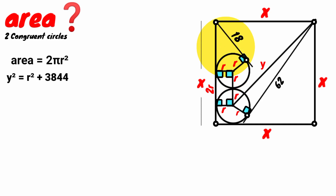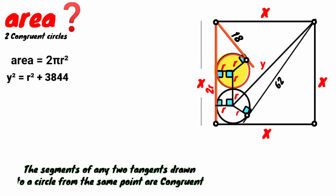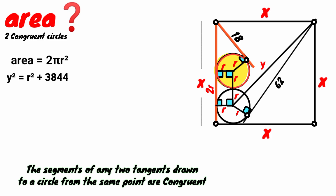Come back here — we see this tangent and this meet at this point, so we can say they were drawn to the circle from an external point. From circle theory, there is another rule that when two tangents are drawn to a circle from the same external point, their segments are equal. So since this segment has its length to be 18 units, this must also be 18 units in length.